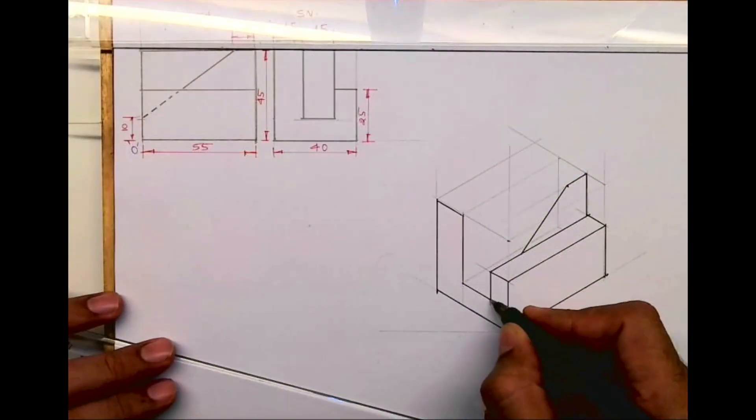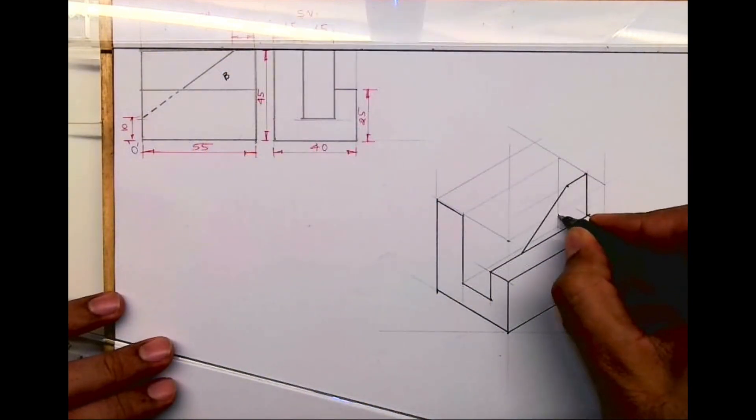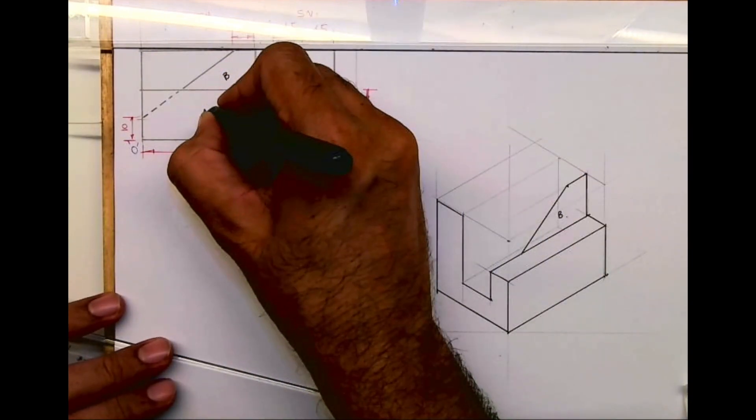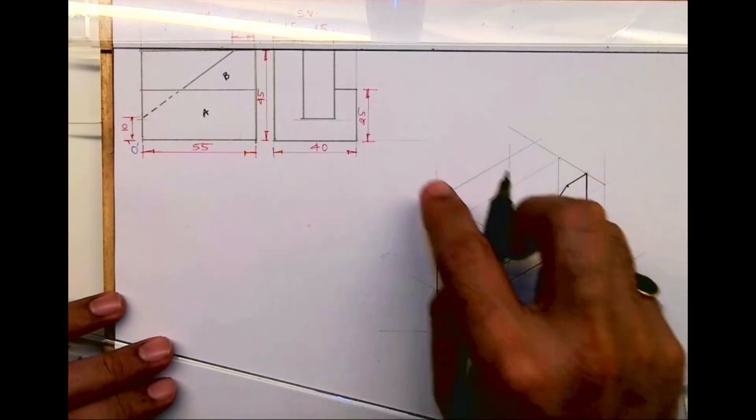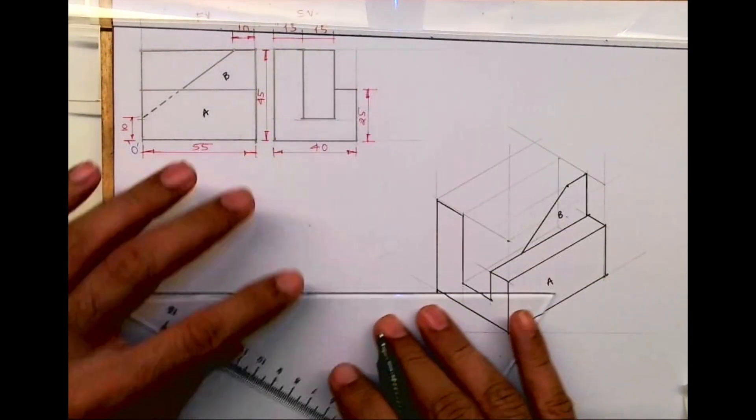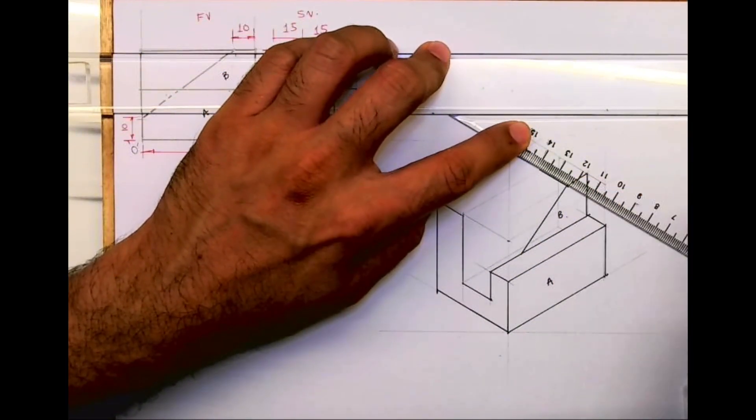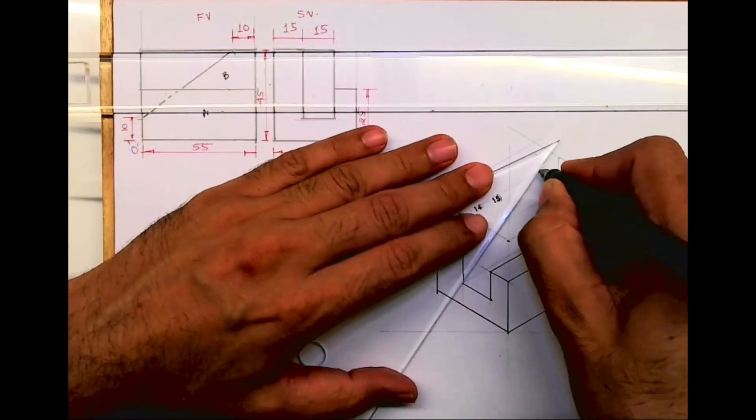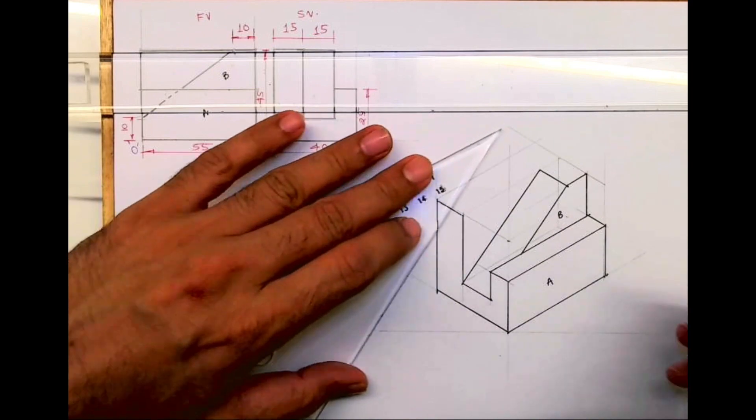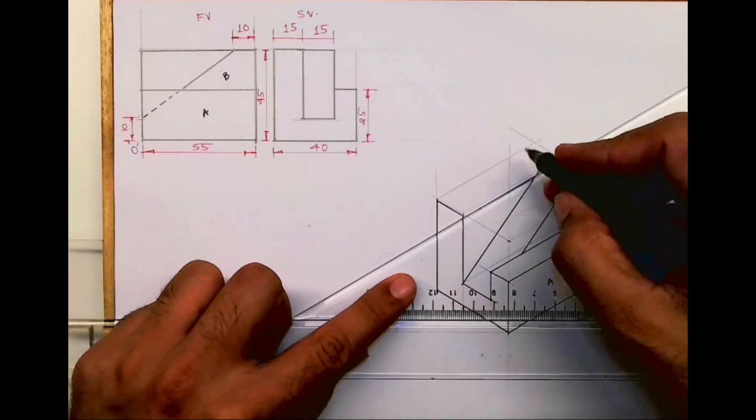Now after this, how much is this? 15 behind, right? This is part B, this is part A. So part A is done. Part B is 15 behind. You take this 15 behind. This is how it will come. This will be dark.